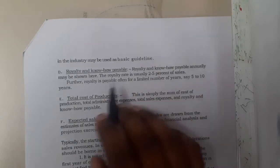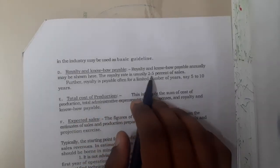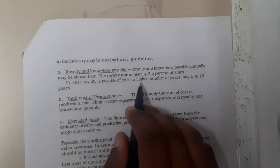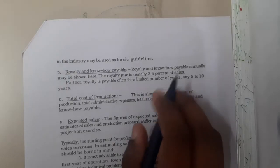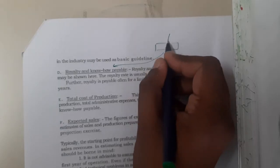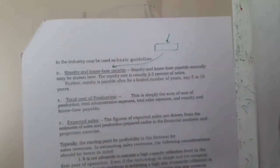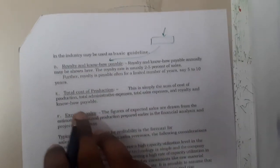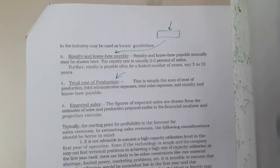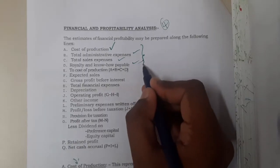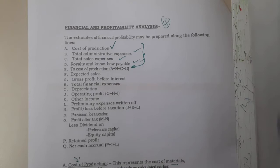Next is royalty and know-how payable. Royalty and know-how payable annually may be shown here. The royalty rate is usually two to five percent of sales, and royalty is payable often for a limited number of years, say five to ten years. Basically, it refers to the amount paid to employees for extra sales. The total cost of production is the sum of all those components — A, B, C, and D.